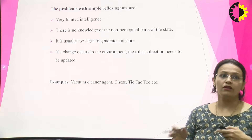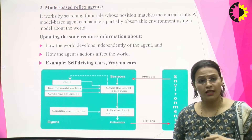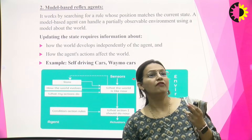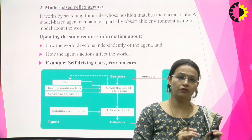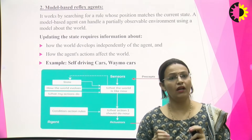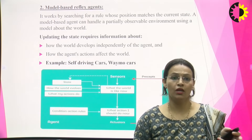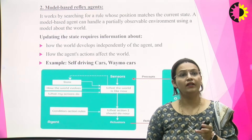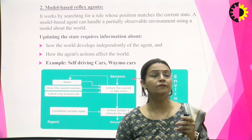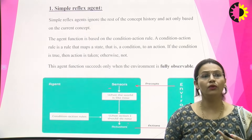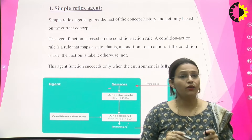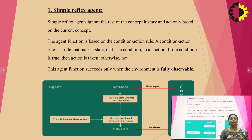The second type is the model-based agent, which is an extension to the simple reflex agent. This agent works on a searching rule where the position matches the current state — meaning before working with any condition, it first matches its current situation to where it needs to go, and reaches the model closest to its proximity level. The model-based agent can handle a partially observable environment, whereas the simple reflex agent only works in a fully observable environment.